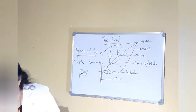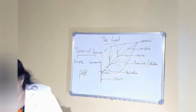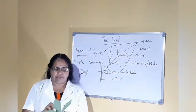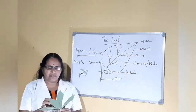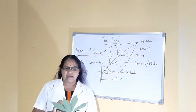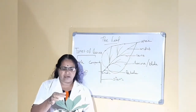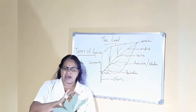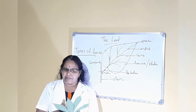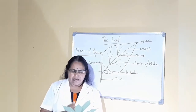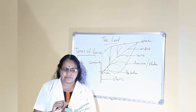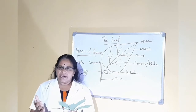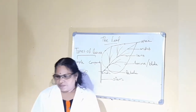Here you can see the different types of leaf shapes. Some leaves are elongated, some leaves have a conical end, some leaves have an entire margin, some leaves are round. Like that, there are different types of leaves.